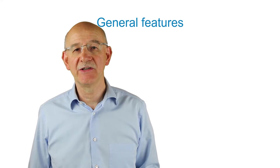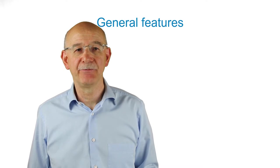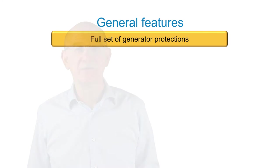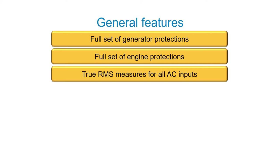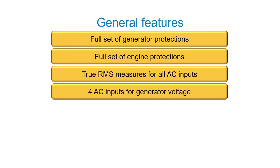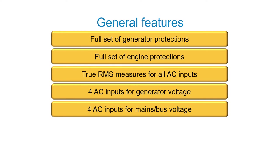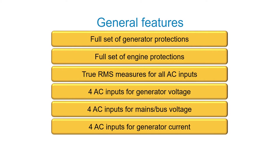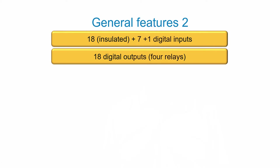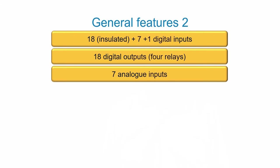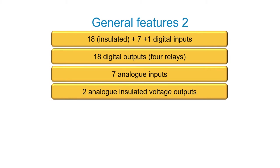Let's start summarizing the general features of the controller: full set of generator protection, full set of engine protection, True RMS with high sample rate measures for all AC inputs. There are 4 AC inputs for generator voltage, 4 AC inputs for mains bus voltage, and 4 AC inputs for current measurement. 18 insulated plus 7 plus 1 digital inputs, 18 digital outputs for relay, and 7 analog inputs.